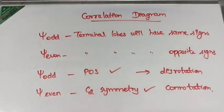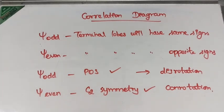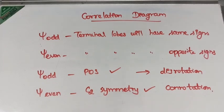Hello all. Today in this video we are going to see about the correlation diagram of electrocyclic reactions — how to draw the correlation diagram for electrocyclic reactions. This video will be useful for college students doing their second MSc because they have pericyclic reactions in their syllabus. In semester exams they will ask you to draw the correlation diagram for electrocyclic reactions, maybe for 1,3-butadiene or 1,3,5-hexatriene. Note that in CSIR they won't ask these types of questions. So if you are a college student, listen to this carefully.